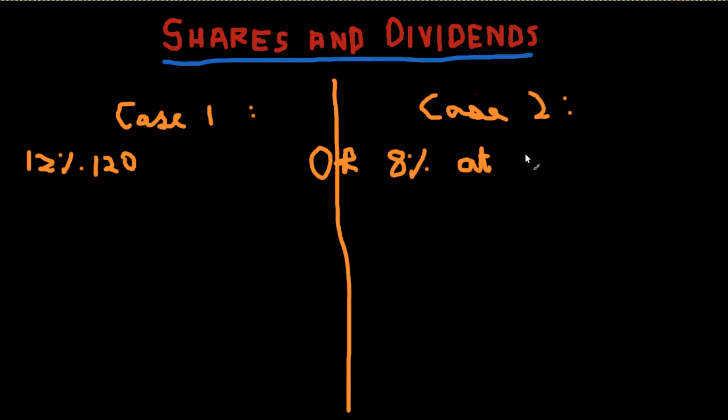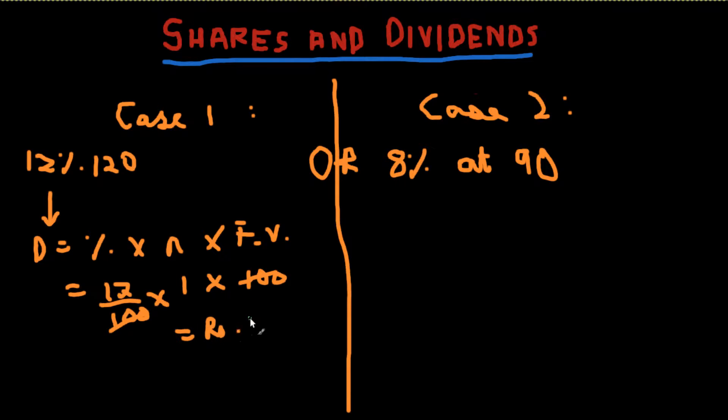Okay, so you do assume the face value to be 100 over here, so we are going to calculate the dividend, dividend equal to the percent into N into face value. So over here, in this case, it's 12 by 100 into N, let's take N as 1, just 1 share, and the face value, which is assuming 100, since it's not given, cut, cut, rupee 12, you get. Similarly, over here, same method, D is equal to percent, which is 8 by 100 into N, which is 1, into face value, which is 100, so by this, you get rupee 8.